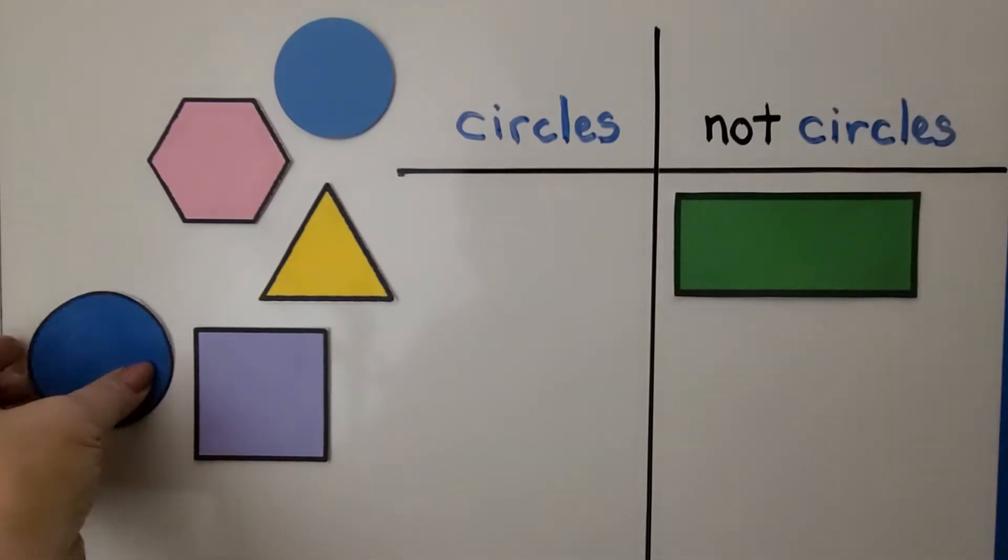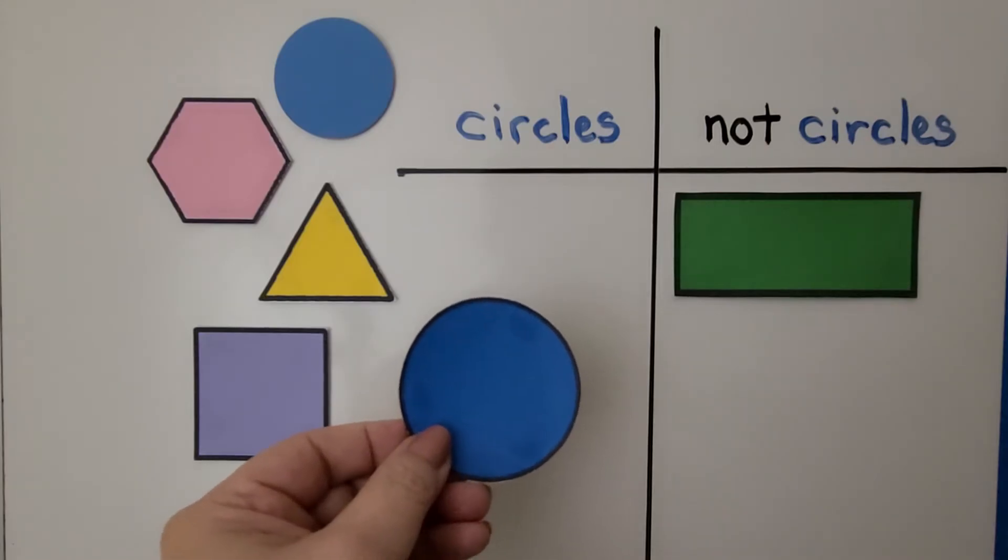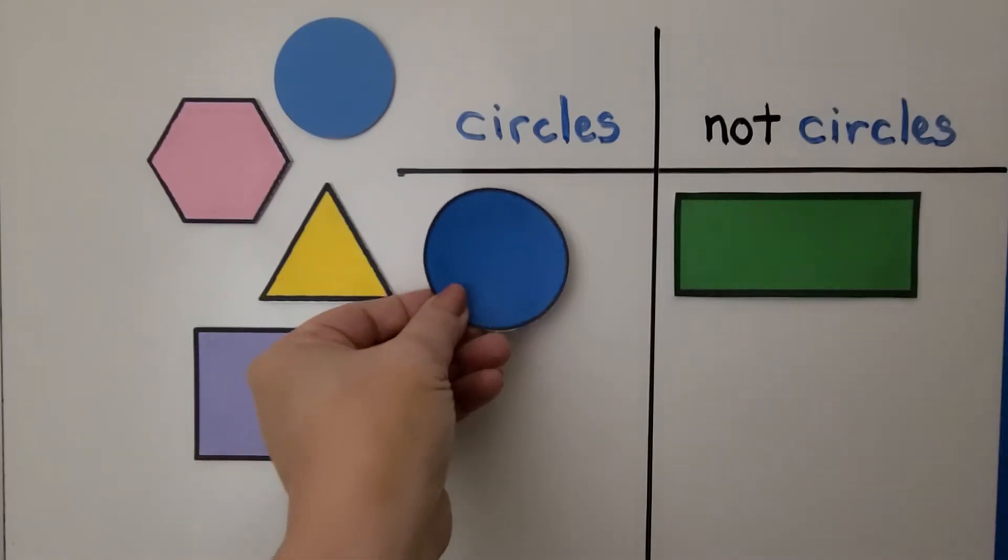Do you think this is a circle or not circle? If you said circle, you're right. It's round and flat. That's a circle.